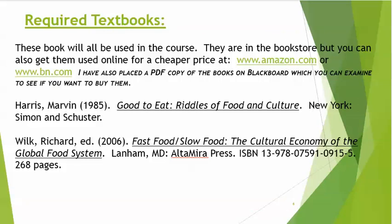There are two textbooks we're going to need for the course. You can get them in the bookstore or you can get them cheaper used at Amazon or barnesandnoble.com. I've also placed a PDF copy of the books on Blackboard, which you can examine to see if you want to buy them. The books are 'Good to Eat: The Riddles of Food and Culture' and 'Fast Food, Slow Food: The Cultural Economy of the Global Food System.' We're going to need both of these books for the course.